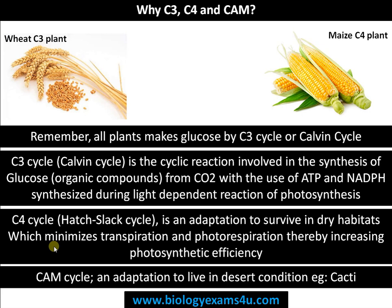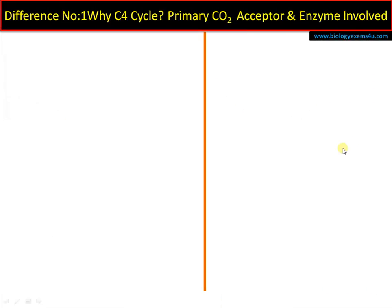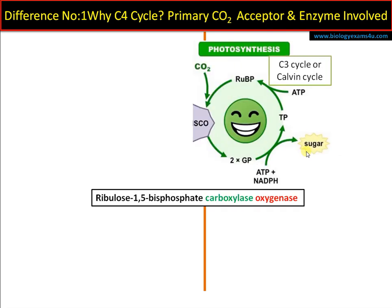Wheat is a C3 plant and maize is a C4 plant. Moving into the differences — difference number one: primary carbon dioxide acceptor and enzyme involved in the first step. In C3 cycle, carbon dioxide combines with RuBP (ribulose biphosphate) and the enzyme is RuBisCO (ribulose 1,5-biphosphate carboxylase oxygenase). It has carboxylase activity, binding to CO2 and forming a C3 compound. ATP and NADPH from the light reaction are utilized, ultimately forming glucose.